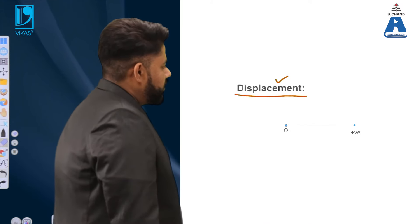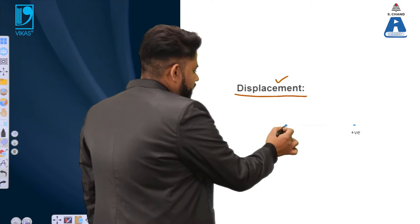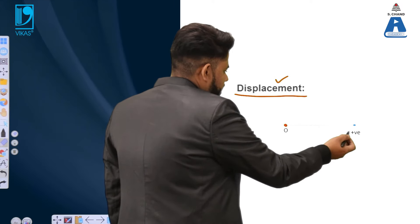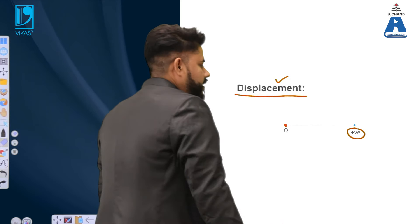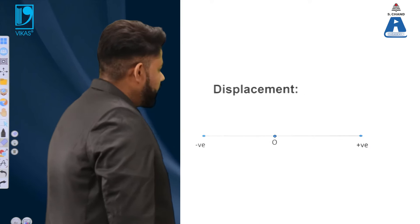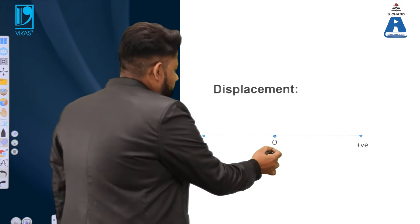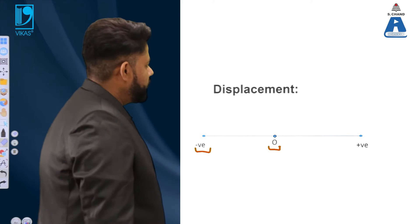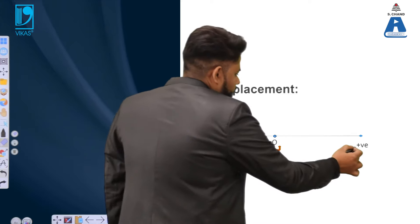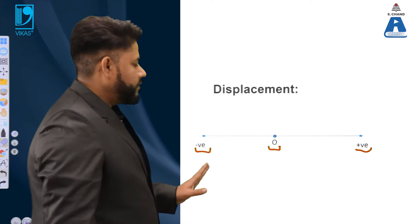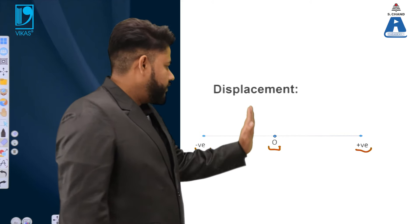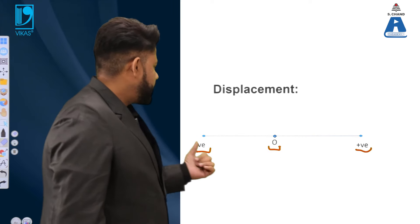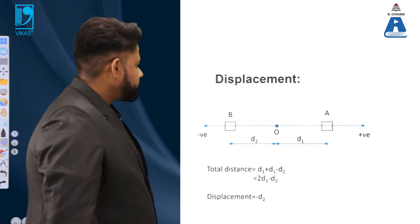In terms of displacement conventions: if an object moves from a fixed reference point O towards the right side, that is considered a positive displacement value. If the object moves in the opposite direction, that is considered a negative value of displacement. So movement to the right from the reference point is positive displacement; otherwise it is negative.